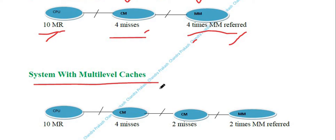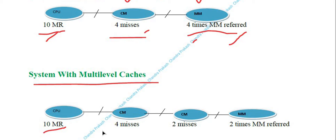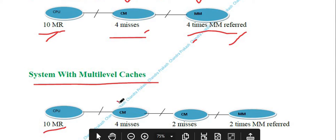For a system with multiple caches, if we want to further enhance performance, we increase the levels of cache. In a two-level cache organization, the CPU generates 10 memory requests. Out of 10, 6 memory requests are fulfilled by the L1 cache, meaning 4 misses occur in L1 cache.